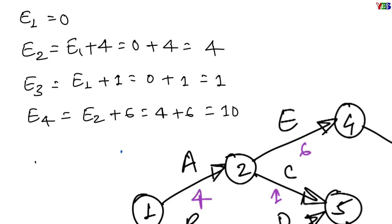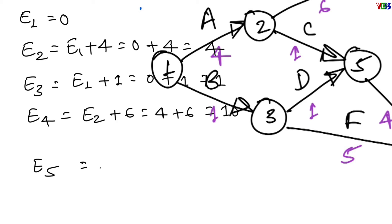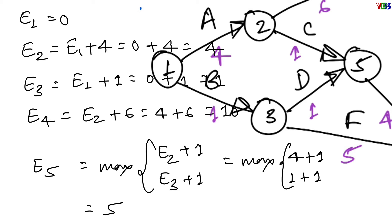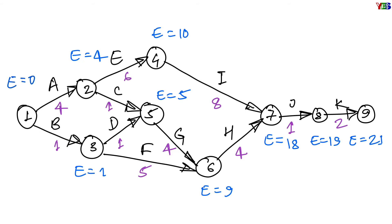At event 4, E4 = E2 + 6 = 10. Next is event 5, which is the common head event of activities C and D. So the value of E for it will be the maximum from E2 + 1 and E3 + 1, that means maximum from 4 + 1 and 1 + 1, and the answer is 5. Hence, earliest possible time at event 5 will be 5 hours. Similarly, at event 6, which is the common head event of activities G and F, E6 = maximum from E3 + 5 and E5 + 4, which is 9. In the same way, we can calculate at events 7, 8, and 9 and we will get E7 = 18, E8 = 19, and E9 = 21. So here we have completed the computation of earliest possible time on the network diagram.